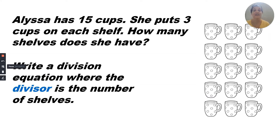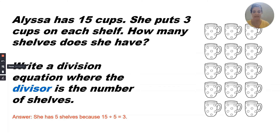Alyssa has 15 cups. She puts three cups on each shelf. How many shelves does she have? We're going to write a division equation where the divisor is the number of shelves. The divisor is the number of groups, and we said there are five groups with three in each group. She has five shelves because 15 divided by five equals three. The divisor is five.